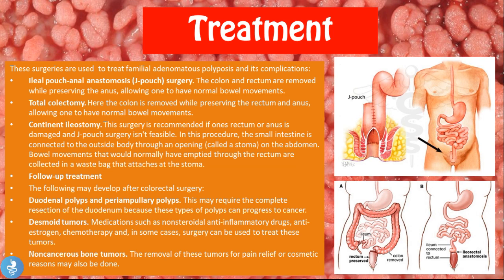The first specific surgery for FAP is the ileal pouch anal anastomosis, known as the J-pouch surgery. In this procedure, the colon and rectum are removed while preserving the anus, allowing normal bowel movements. The last portion of the small intestine — the ileum — is attached to the anus, forming a J-shape, hence the name J-pouch.